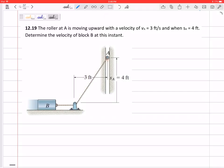All right, one more problem right here. So it says this roller at A is moving upward with a velocity of 3 feet per second. Determine the velocity of block B at this instant.